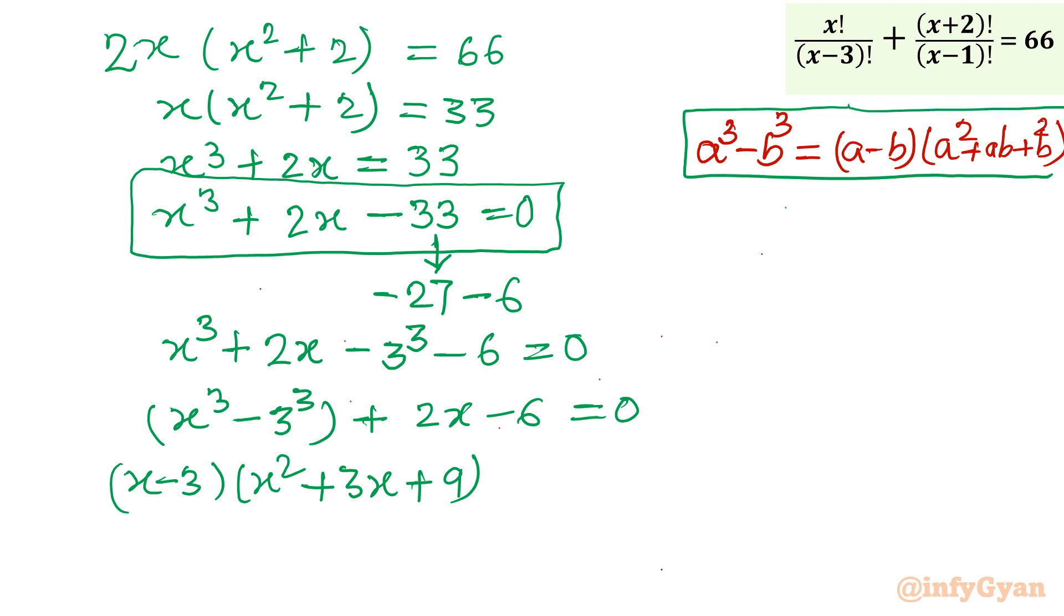And here I am going to take 2 common out, so what is left is x minus 3. Now you can see x minus 3 is again common, so I will take x minus 3 common. So what would be left? x squared plus 3x plus 9 plus 2 equal to 0. So it is already factorized. x minus 3, second bracket we can write x squared plus 3x plus 11.